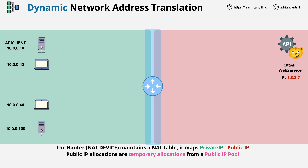Let's say that we have two public IP addresses available for use: 52.95.36.66 and .67. But we have four devices on the left, and all of them at some time need to use public addressing, so we can't use static NAT because we don't have enough public IP addresses.